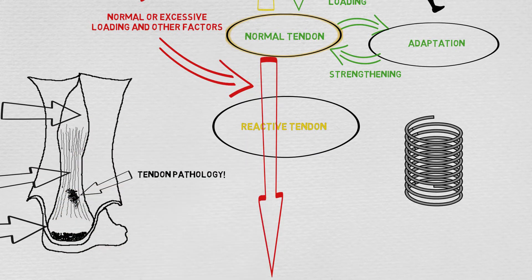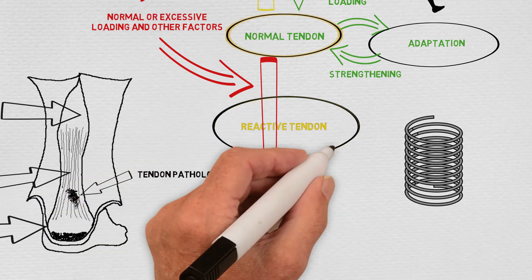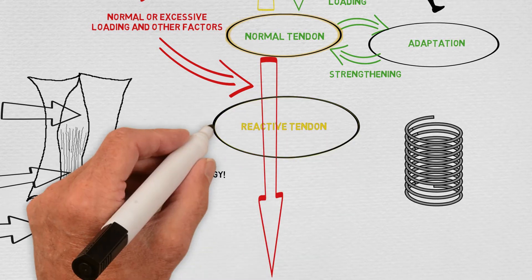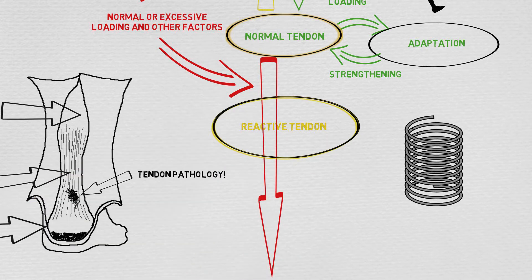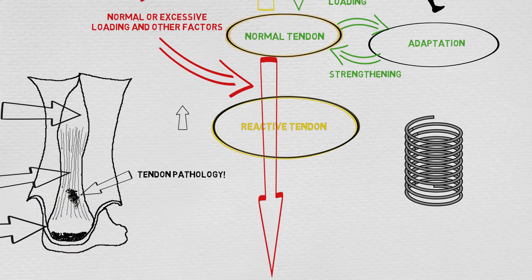In the same way, a normal tendon when subjected to excessive load can become reactive. The reactive tendon will try and thicken to control the load by increasing the number of cells and matrix in the affected portion of the tendon.